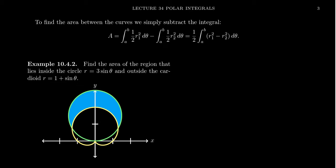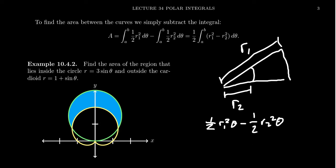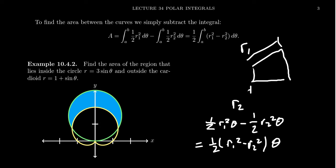To find the area between the curves, you take a sector — basically a pizza slice — and then someone took a bite out of it. You have two different radii: the outer radius r1 and the inner radius r2. The area of the outer sector is one-half r1 squared times theta, and you subtract the inner one: one-half r2 squared times theta. When you take a bite out of your pizza slice, you get a Trivial Pursuit symbol shape. This equals one-half times (r1 squared minus r2 squared) times theta — a difference of squares.